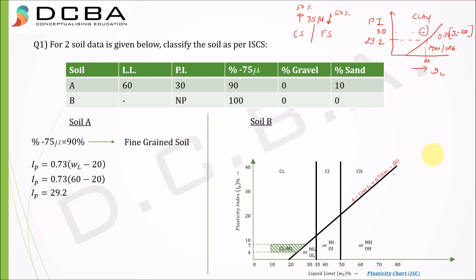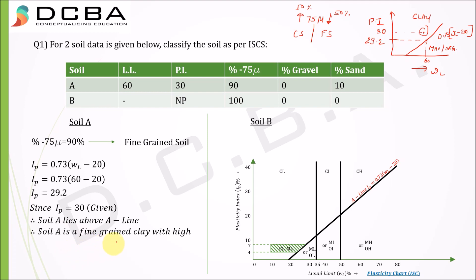Since the plasticity index of 30 places Soil A above the A-line, and the liquid limit is 60 which is greater than 50, it is a fine-grained clay with high compressibility. Therefore, Soil A is classified as CH.